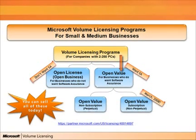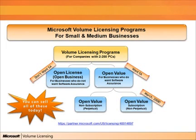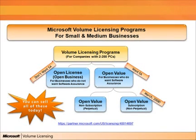The key differentiator between these two programs is open business is designed for clients who want volume licensing rights for their software — such as electronic license protection, downgrade rights, and transfer rights — but are not interested in the software assurance benefits. So they're not looking for upgrade protection, e-learning, or office home use rights, or any of the other software assurance benefits.